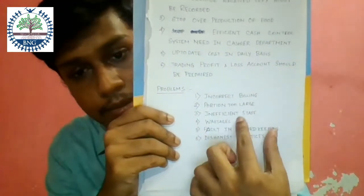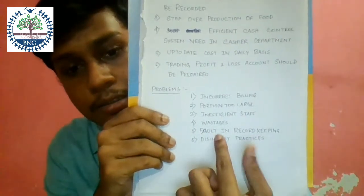Next is wastage itself. Another reason is faults in record keeping. Suppose you don't take the received copy of a particular good when you make a purchase. Then the amount of that good will be missing from your record, discrepancies will occur, and your food cost will be high.